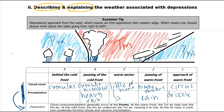Behind the cold front you get sunshine and showers. What you see very clearly is that cloud cover and precipitation generally happens at the fronts. The explanation: at the warm front, the TM air rises over the PM air; at the cold front, the PM air undercuts the TM air, causing it to rise. In both cases, as air rises it cools and condenses, forming clouds and precipitation.